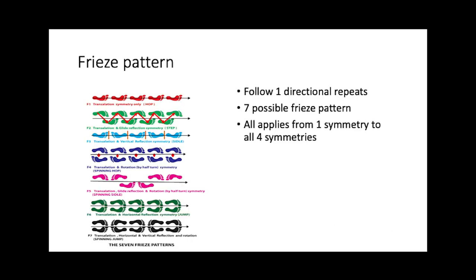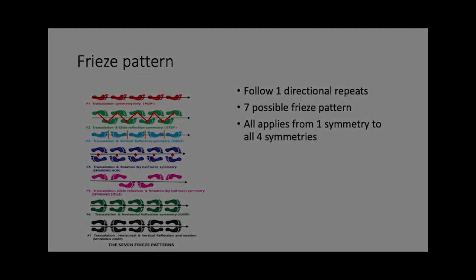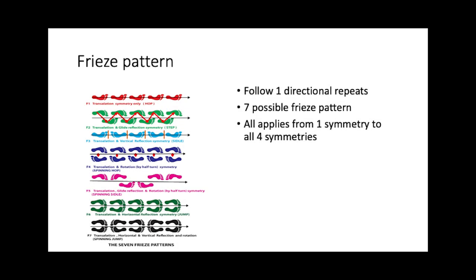Before we talk about the 17 possible orientations of the wallpaper groups, we have to cover their prerequisites: the freeze pattern, which applies those four fundamental symmetries of wallpaper groups. Although they're not related, it also uses reflection, rotation, translation, and glide reflection. These all have 17 possible freeze patterns and they all go in one-directional repeats.